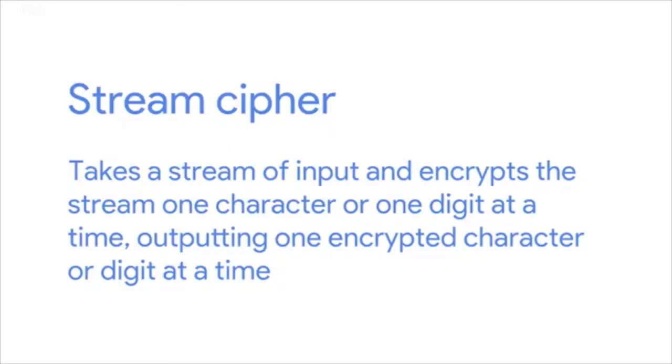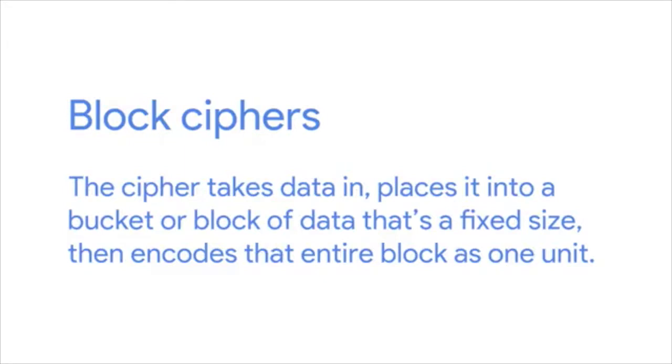There are two more categories that symmetric key ciphers can be placed into: block ciphers or stream ciphers. A stream cipher takes a stream of input and encrypts it one character or one digit at a time, outputting one encrypted character or digit at a time — a one-to-one relationship between data in and encrypted data out. A block cipher takes data in, places it into a bucket or block of a fixed size, then encodes that entire block as one unit. If the data isn't big enough to fill the block, the extra space will be padded. Generally, stream ciphers are faster and less complex to implement, but can be less secure than block ciphers if key generation isn't done properly.